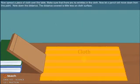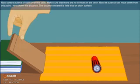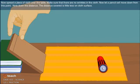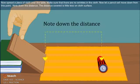Now, spread a piece of cloth over the table. Make sure that there are no wrinkles in the cloth. Now, let a pencil cell move down from this point. Note down the distance. The distance covered is a little less on cloth surface.